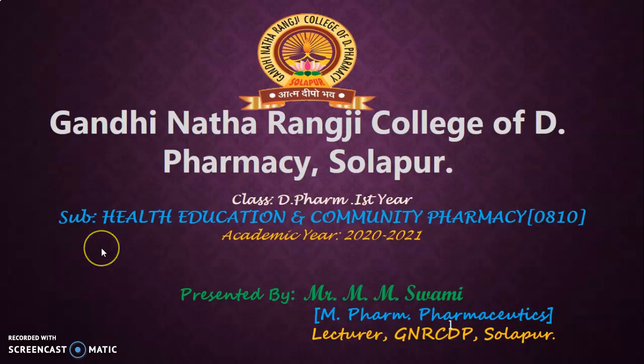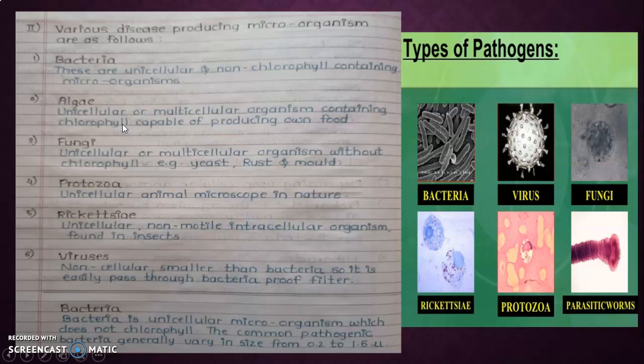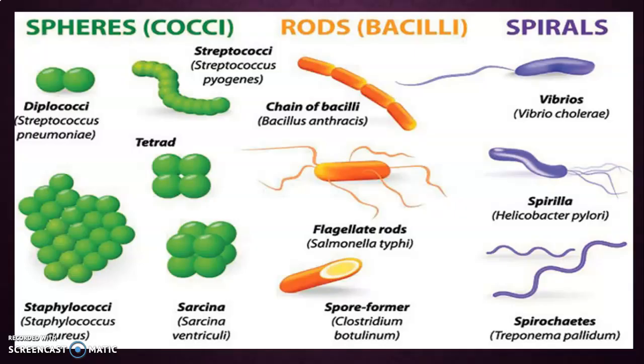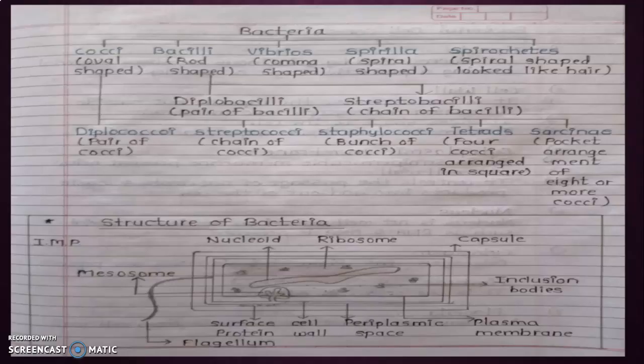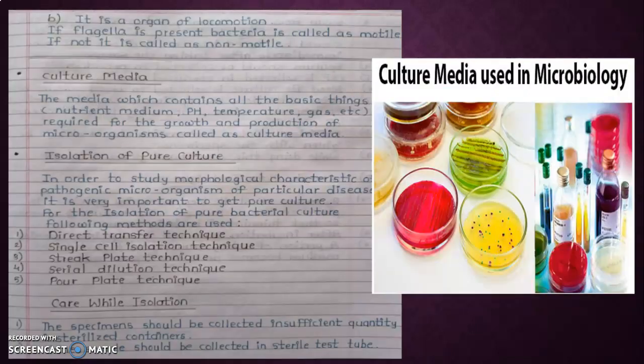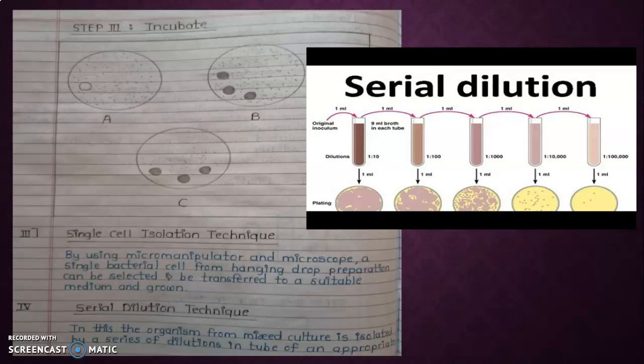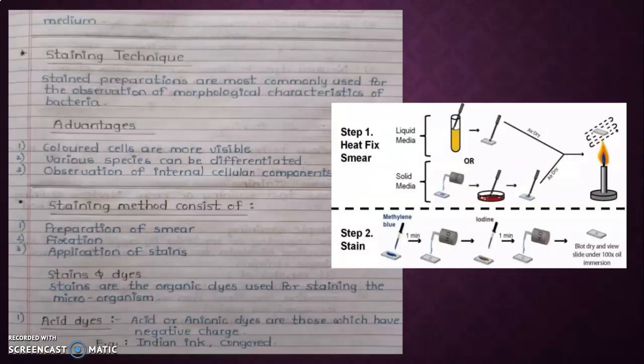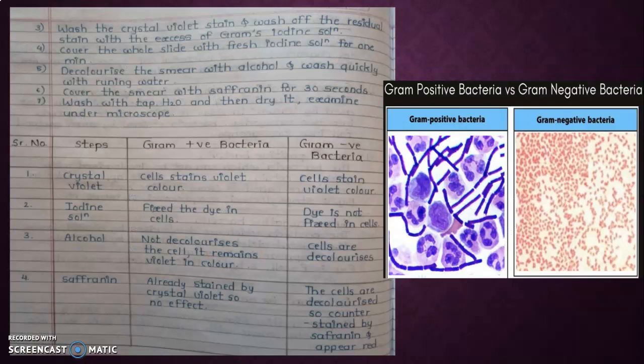Hello everyone, we already started topic number seven, fundamental principles of microbiology. In this topic we already covered the definition of prokaryotes and eukaryotes, classification according to their shape, culture media, its definition, how we are going to isolate the pure culture, its five types of isolation methods. We covered all these methods.